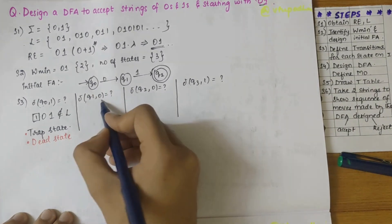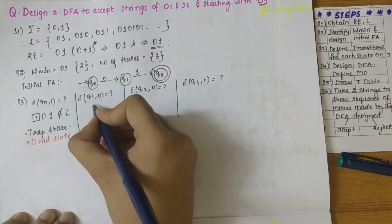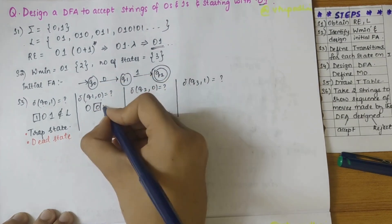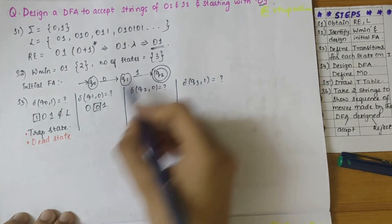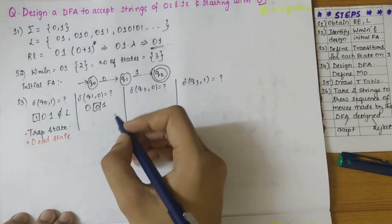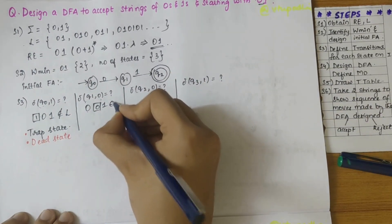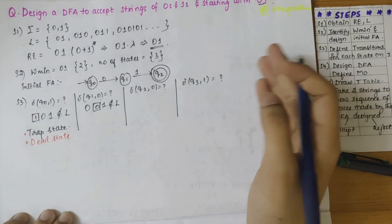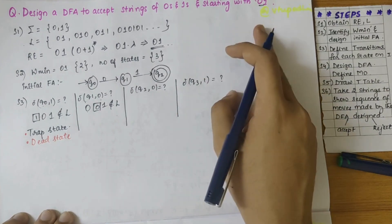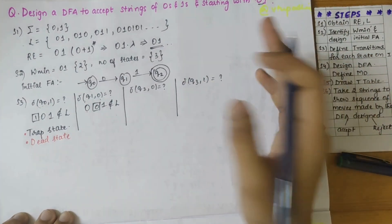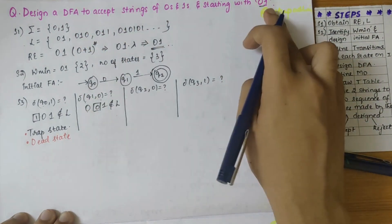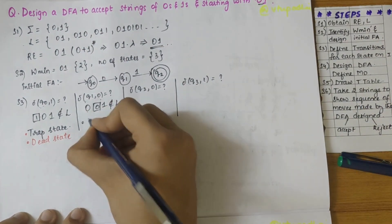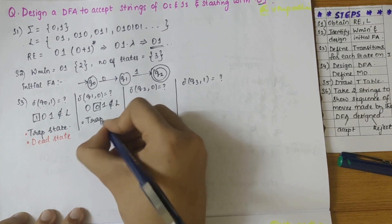Moving on to q1 on 0: we have zero then zero — is it starting with zero-one? No, it is not starting with zero-one, it does not belong to the language set. If you add anything further, will it start with zero-one? No, it is not possible. In such cases, it falls under the trap state.